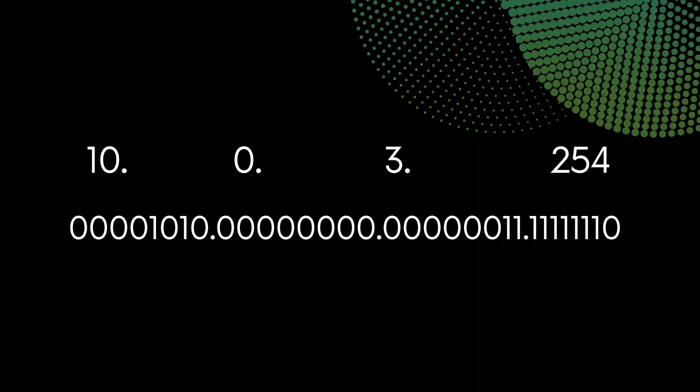An IP version 4 address is made up of four octets, each one separated by periods. These octets represent binary bits that are converted to decimal numbers for readability. A single binary digit is called a bit, and when we string together 8 bits, we call it a byte. For instance, the IP address 10.0.3.254 may appear simple, but there's a lot more than meets the eye — the first octet, 10, is actually 00001010 in binary. Our networks interpret this binary data, but it's displayed to us in a form that's simple to understand.